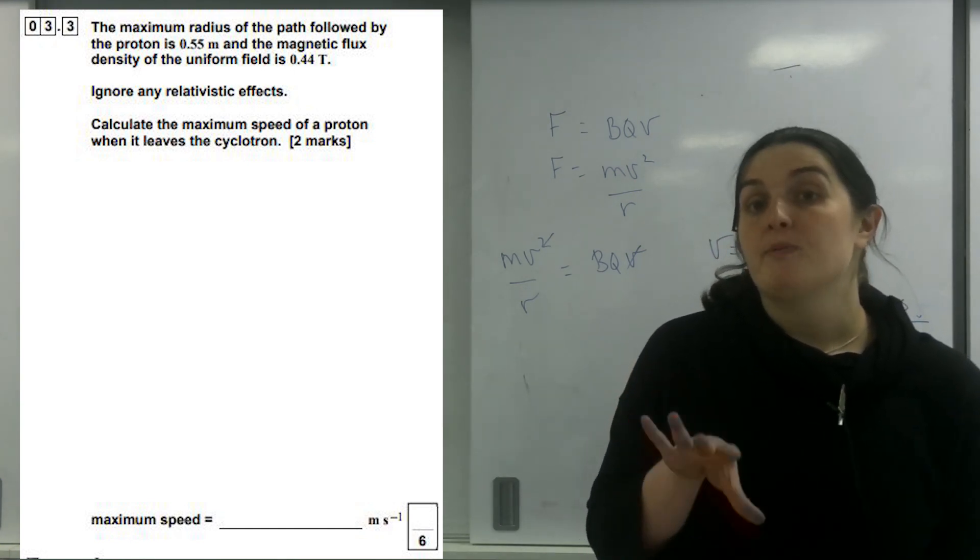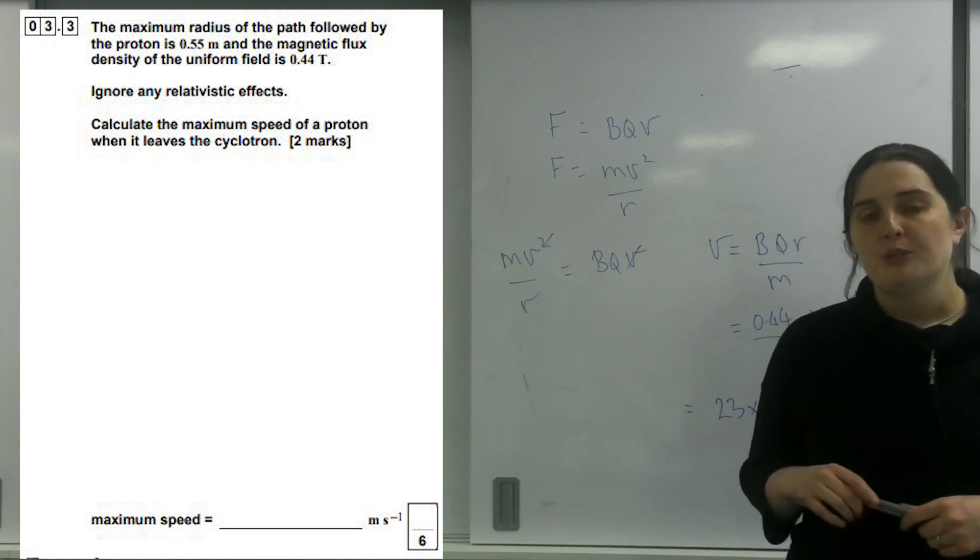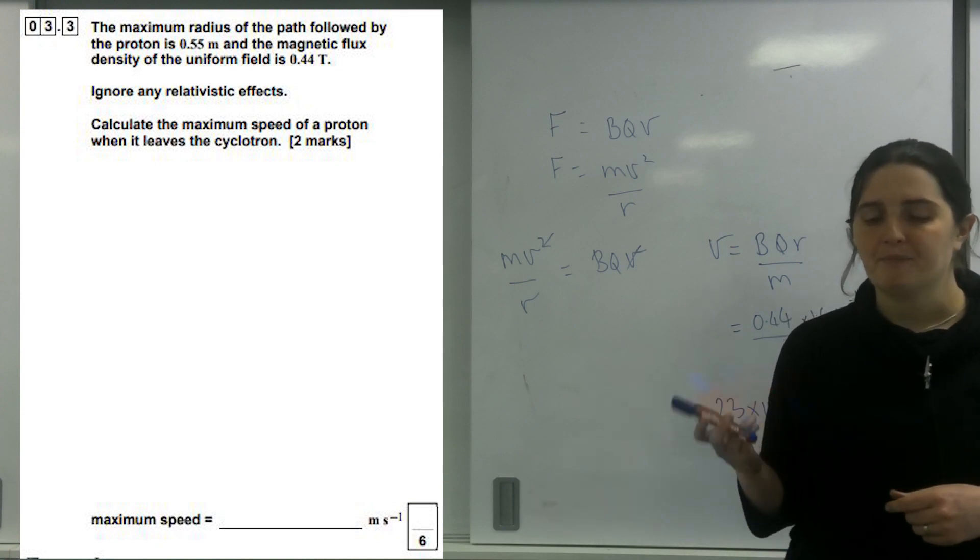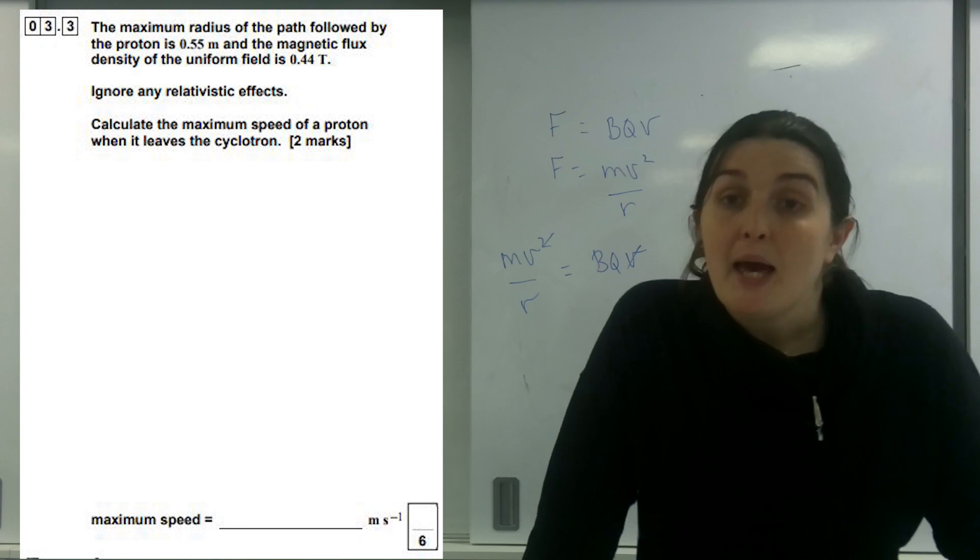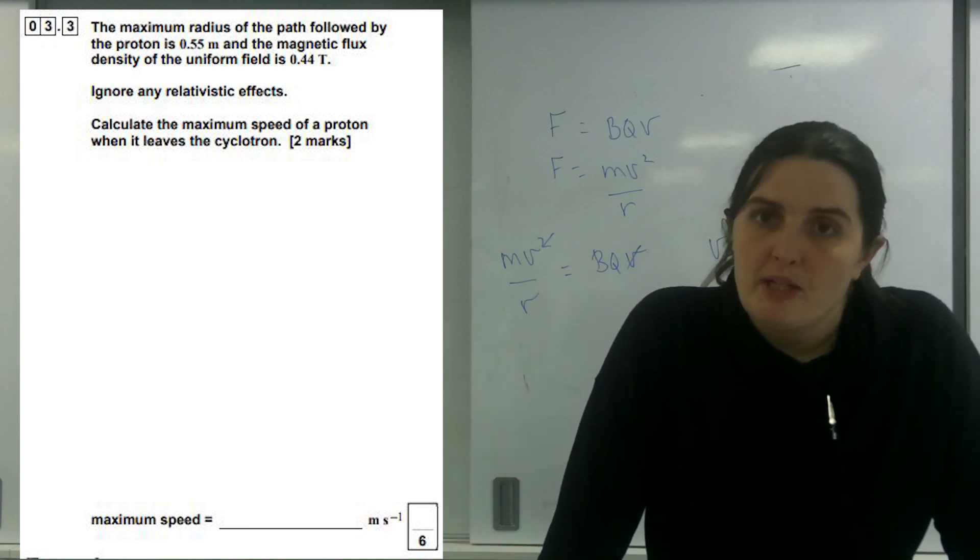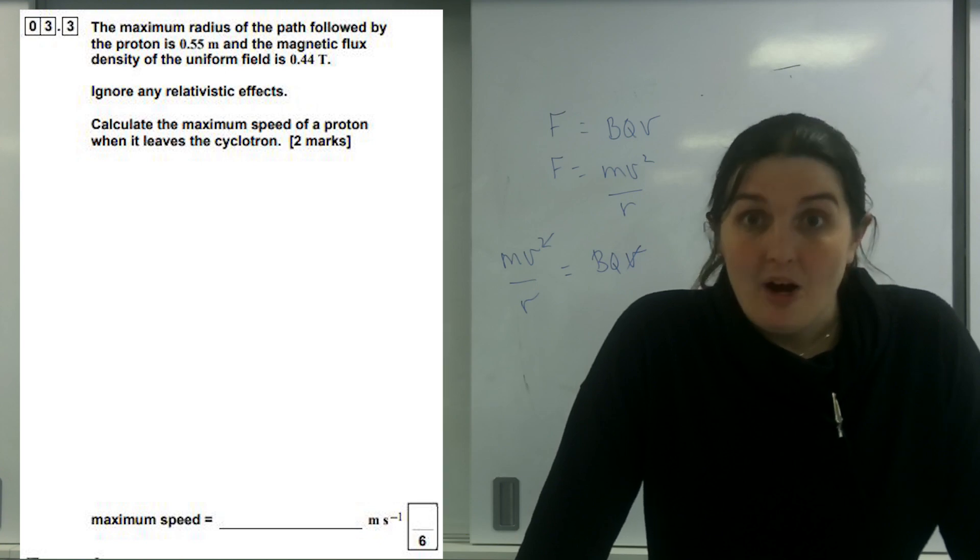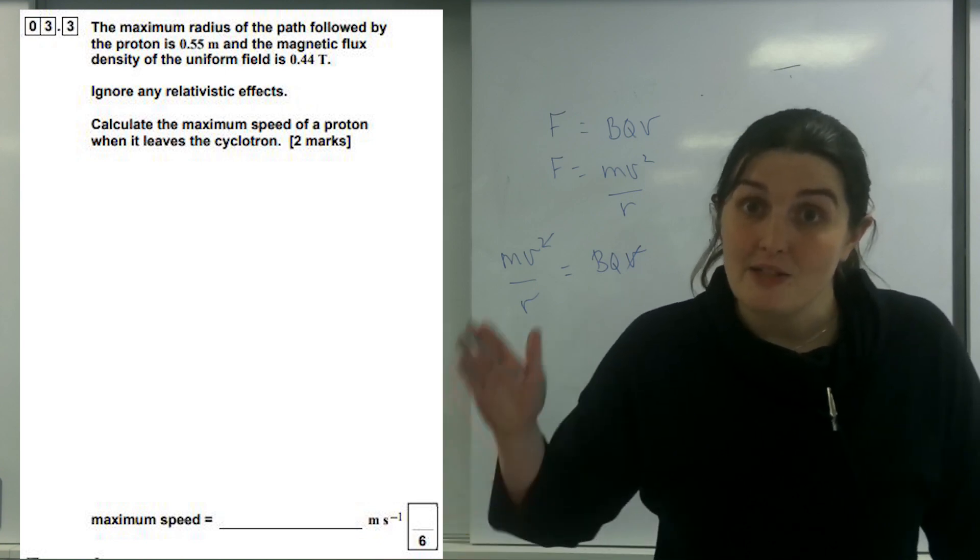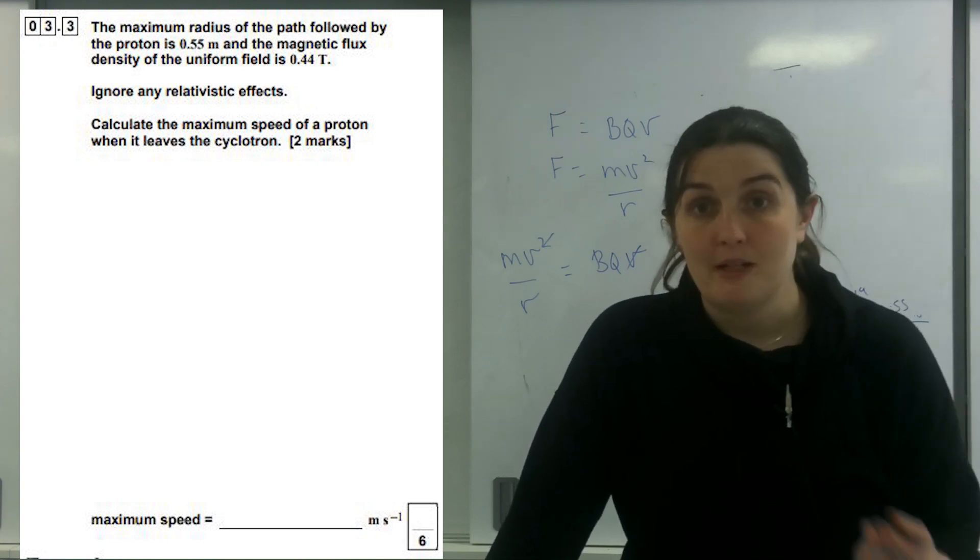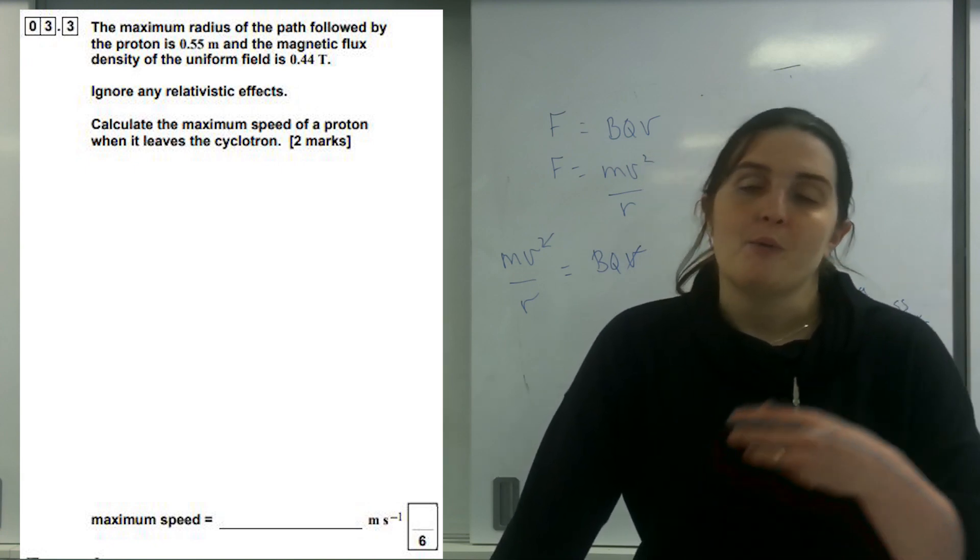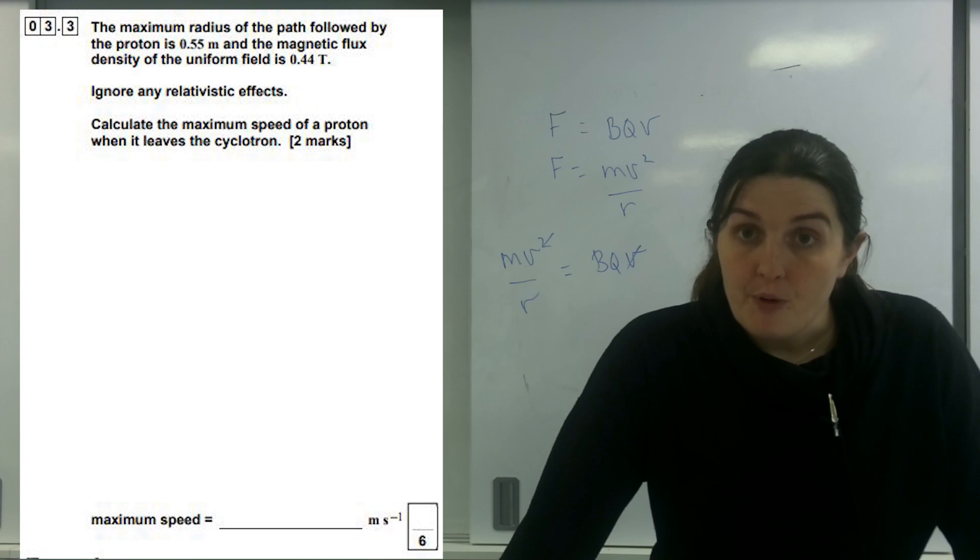The frustrating part about this question is a lot of times I saw students were able to calculate this bit because they went oh it's circular motion, it's BQV, but they couldn't do the question above which was the same thing with the same kind of formula. Here's a little hint for you: if you see a diagram of an object moving in a circular path, immediately go I must be using mv squared over r or m omega squared r, I'm going to be using my circular motion formula. Then you go what is causing that circular motion? It's the magnetic force here, so I'm going to put the magnetic force equation down and then equate them because the thing causing the centripetal force is this magnetic force, so BQV equals mv squared over r.